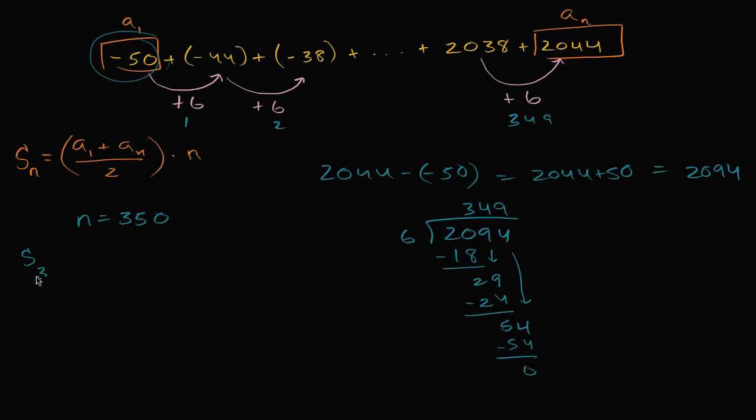And so we can say the sum of the first 350 terms is going to be equal to the average of the first and last term. So negative 50 plus 2044 over two times 350. So let's see, negative 50 plus 2044, that's going to be 2094. 2094 divided by 2 times 350.